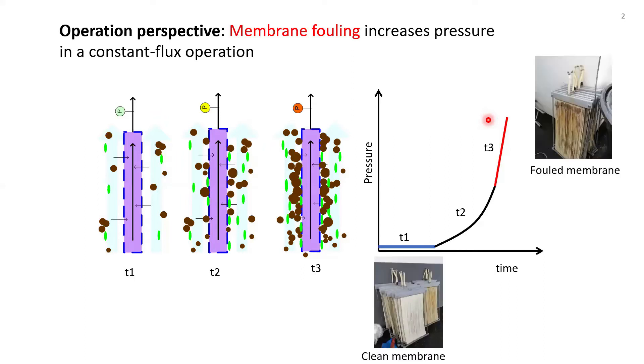This is an example of the real MBR membranes. You can imagine this is the condition when you start the operation, and at the end of this cycle, you will have a fouled membrane. So after this condition is attained, the operation must be stopped, and the system must be cleaned, and then the operation must be restarted again.